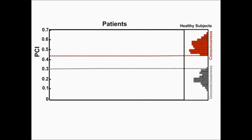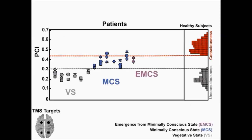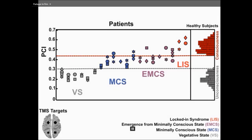We then did the same in patients with severe brain injuries. Patients in vegetative states who are awake but unconscious show low PCI values, corresponding to the low values measured during deep sleep and anesthesia. Patients in minimally conscious state who recover some signs of consciousness show intermediate PCI values. Patients who have emerged from MCS and recovered functional communication — exit MCS — show even higher PCI values, similar to what is observed in locked-in syndrome: patients who are conscious but fully paralyzed except for eye movement. And this is true wherever we stimulate in the brain, as you can see here with the different TMS targets on the bottom left.